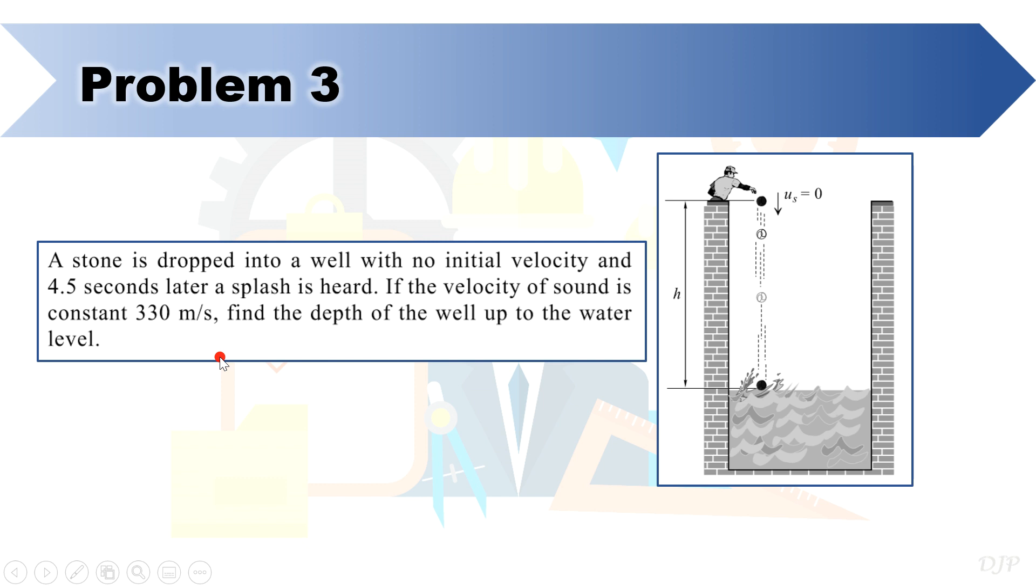Take note that in this problem, in order to get the depth of the well, we need to analyze two motions. One is the motion of the stone, and the other is the motion of the sound. To avoid confusion in dealing with several variables later, let's use this subscript where subscript st represents the stone, while subscript sd represents the sound. Also, let's place the reference at the initial position of the stone.